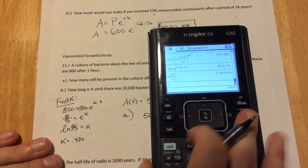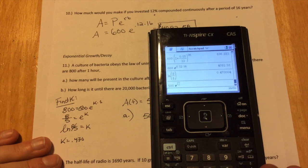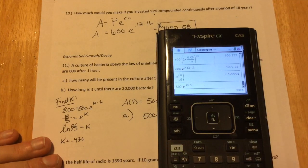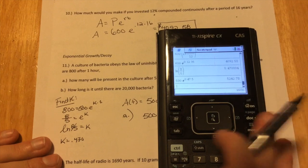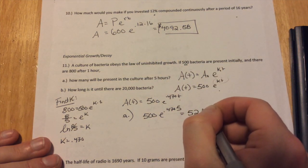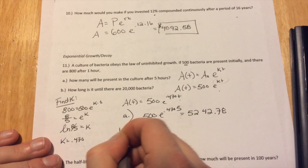So A is saying, how many will be present after five hours? Plug 500 into T. So we have 500 E to the .470 times five. So I just go 500 times E to the .47 times five. Make sure that's right. Looks good. Hit enter. We get 5,242.78.